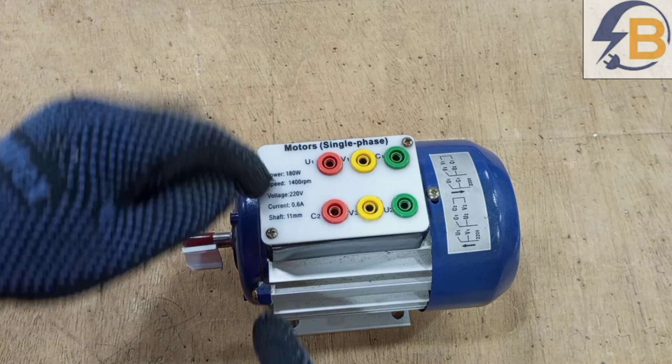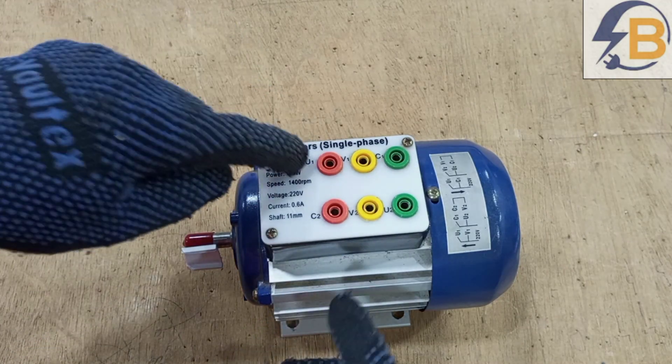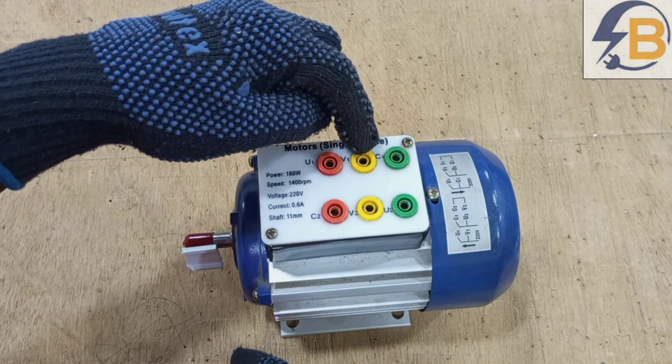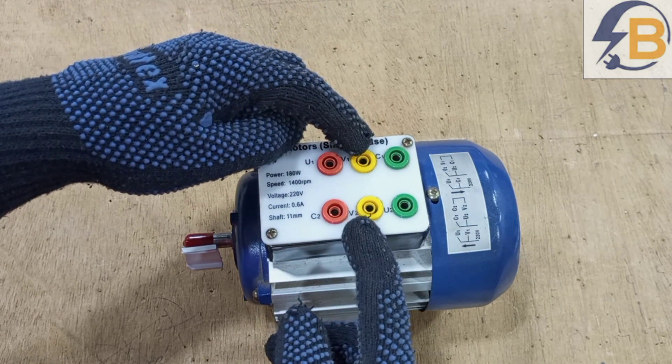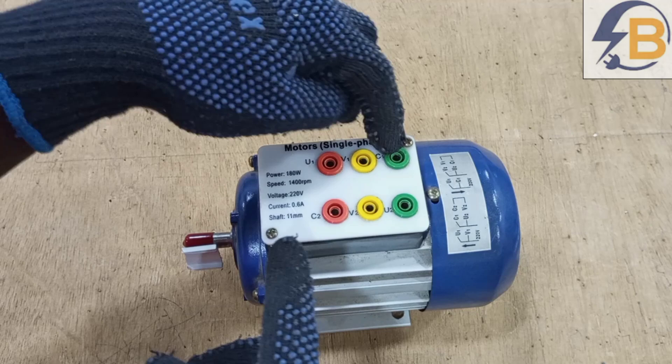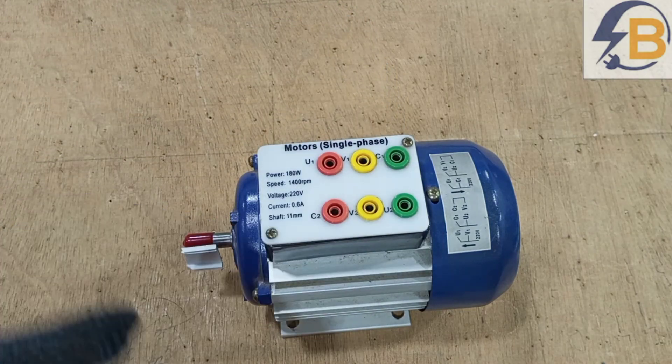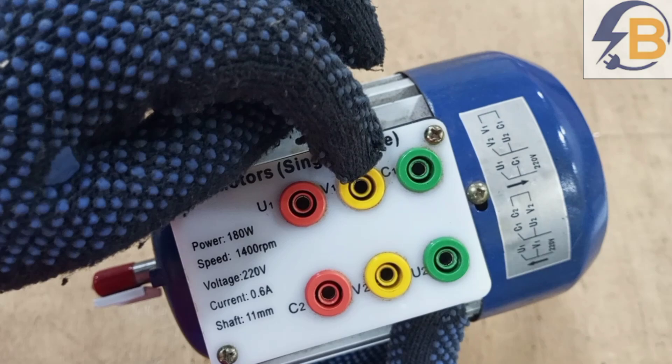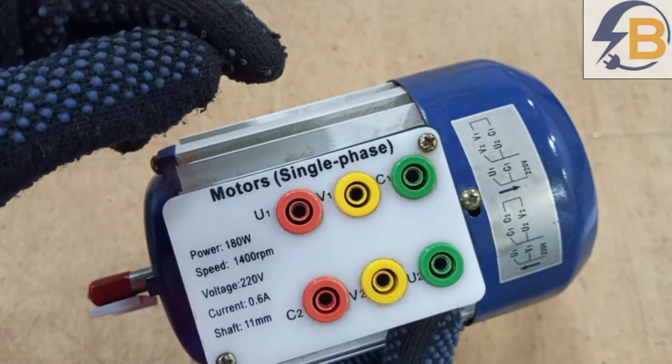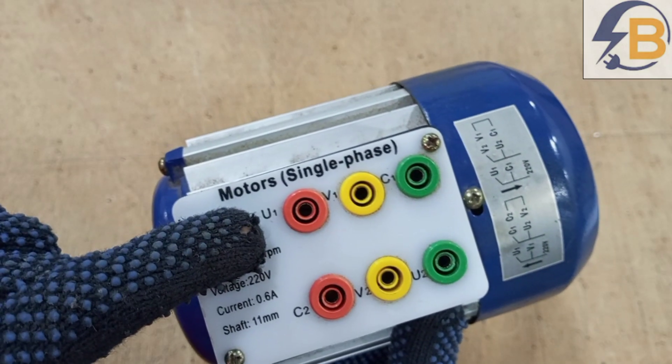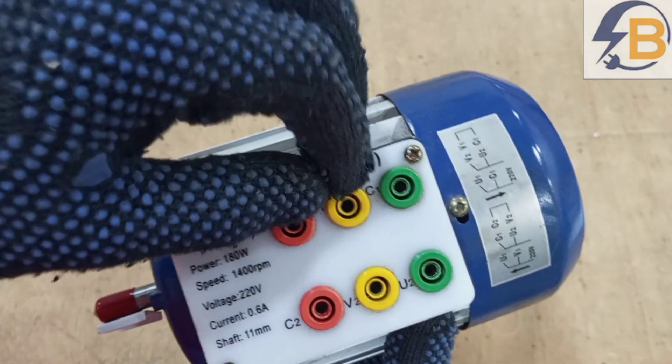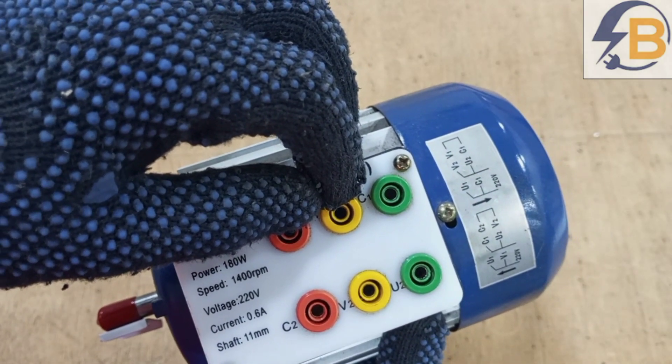So I said that we have a main winding, which is U1 and U2. Then we also have an auxiliary winding, which also ends here. Then we have the capacitor leads, C1, and then C2 here. So the first thing we have to understand is that the auxiliary winding is connected from the main winding. So there is a common point between the beginning of the main winding and then the beginning of the auxiliary winding.